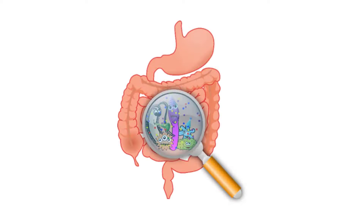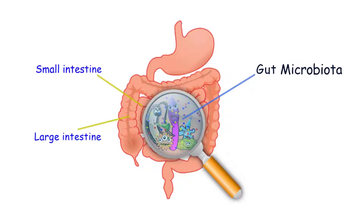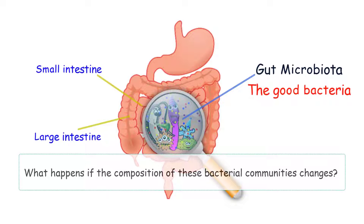Lining the small intestine is a community of bacteria called the gut microbiota. These microscopic inhabitants live in both the small and large intestines. They are indispensable for digestion and various aspects of human health and are often referred to as the good bacteria. But what happens if the composition of these bacterial communities changes? Does human health change when the bacteria in the intestine or gut change?